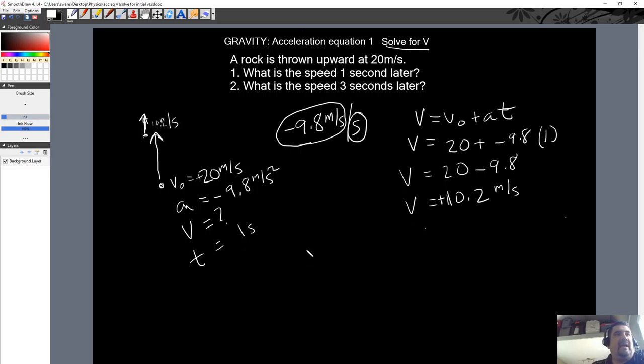All right. So next, let's do the two seconds later, or three, number two is three seconds later. So let's do it again. But this time, it's three seconds later. So let's redo this problem. It's final velocity equals initial velocity, 20 meters per second. Take away 9.8. This time I just put the takeaway t, which is three.